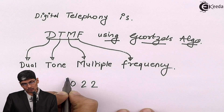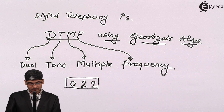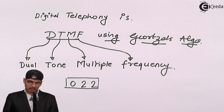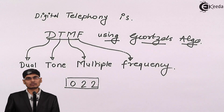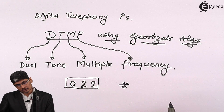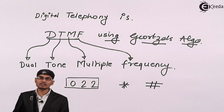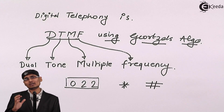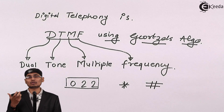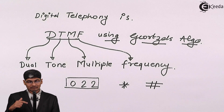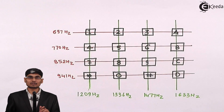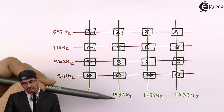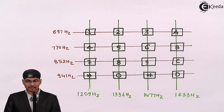Dual tone multiple frequency is used in the dialer mechanism to analyze numerical values. We also have special keys such as star and hash on our keypad. So how does the telephone understand which button or number has been pressed? We developed an intelligent system called dual tone multiple frequency. In this arrangement, you can see there are vertical green lines and horizontal red lines, and next to each line a frequency is written.